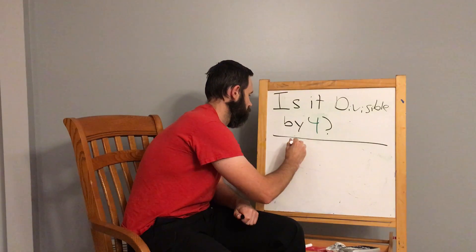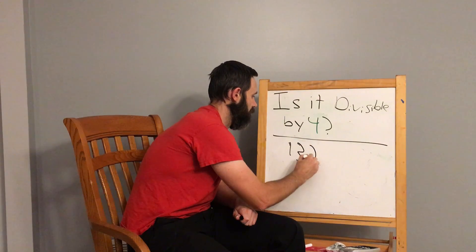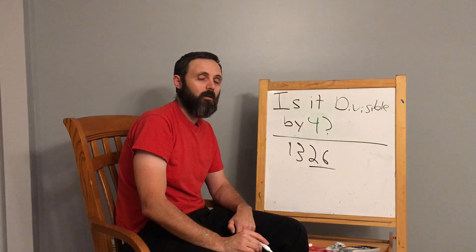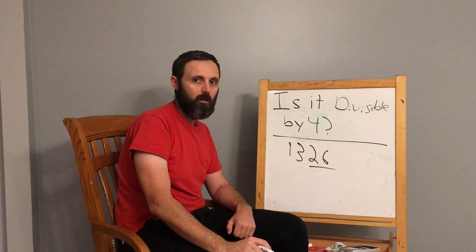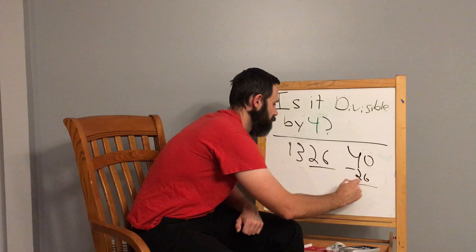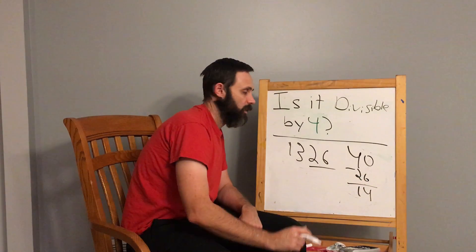Let's look at 1,326. Look at the last two numbers. We're going to go to the next multiple of 20, so 20. Next one will be 40. 40 minus 26 gives us 14.